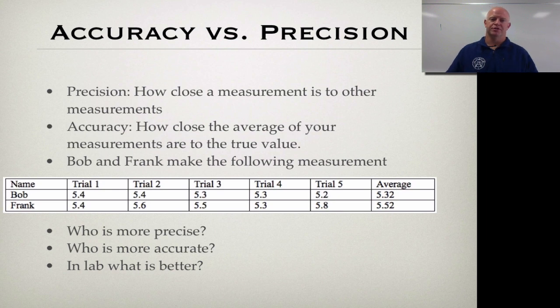So the first one we're going to talk about is precision. According to our notes, precision is how close the measurement is to other measurements. So when you're looking at precision, it's how close did you get versus somebody else versus another person, or if you take multiple trials, how close are your individual trials to each other.